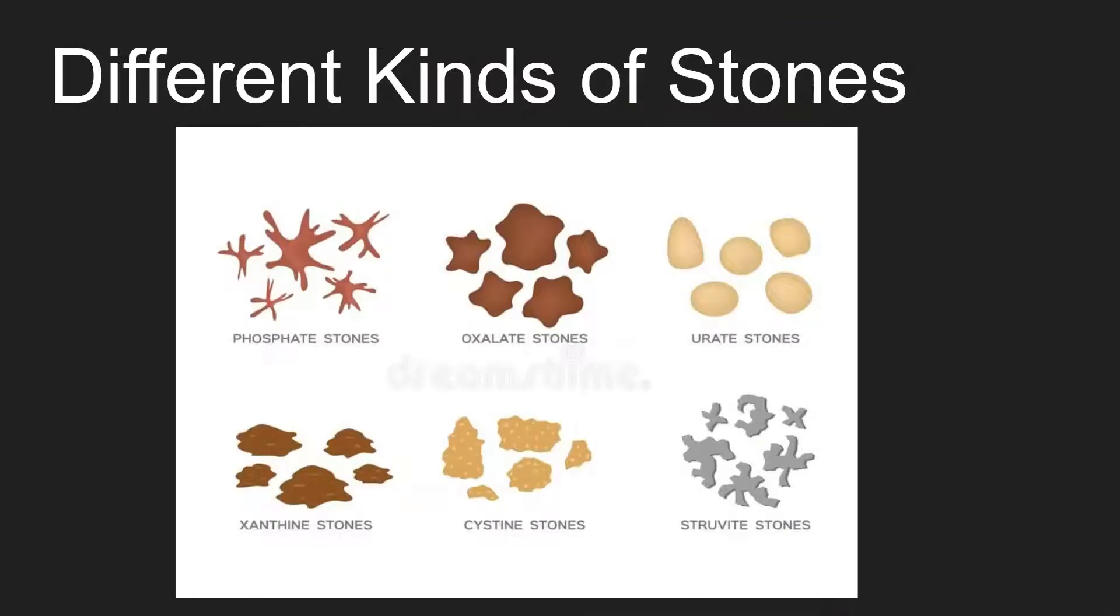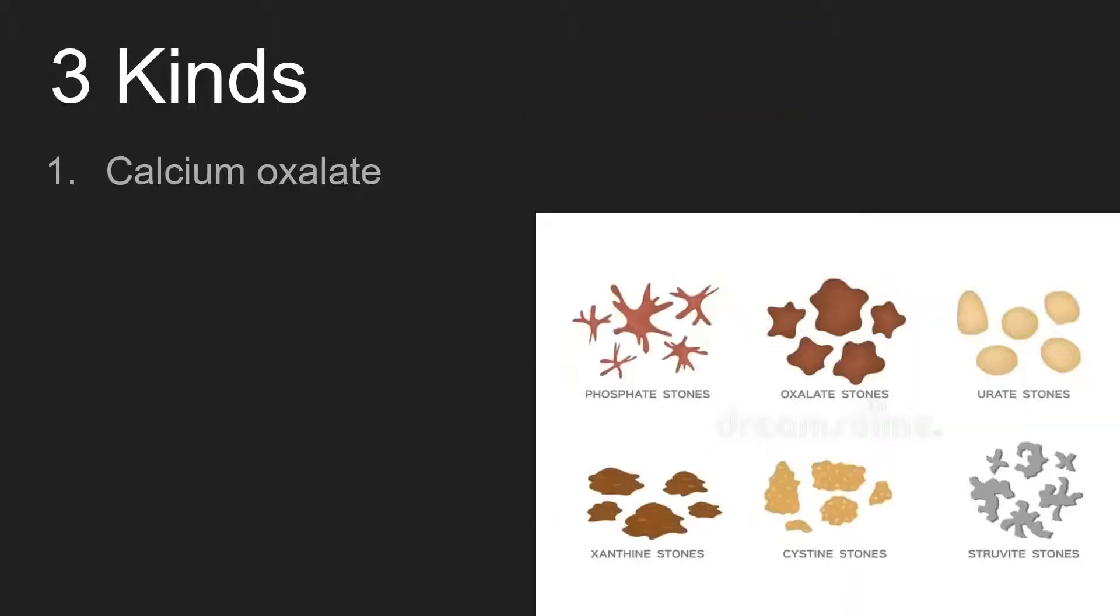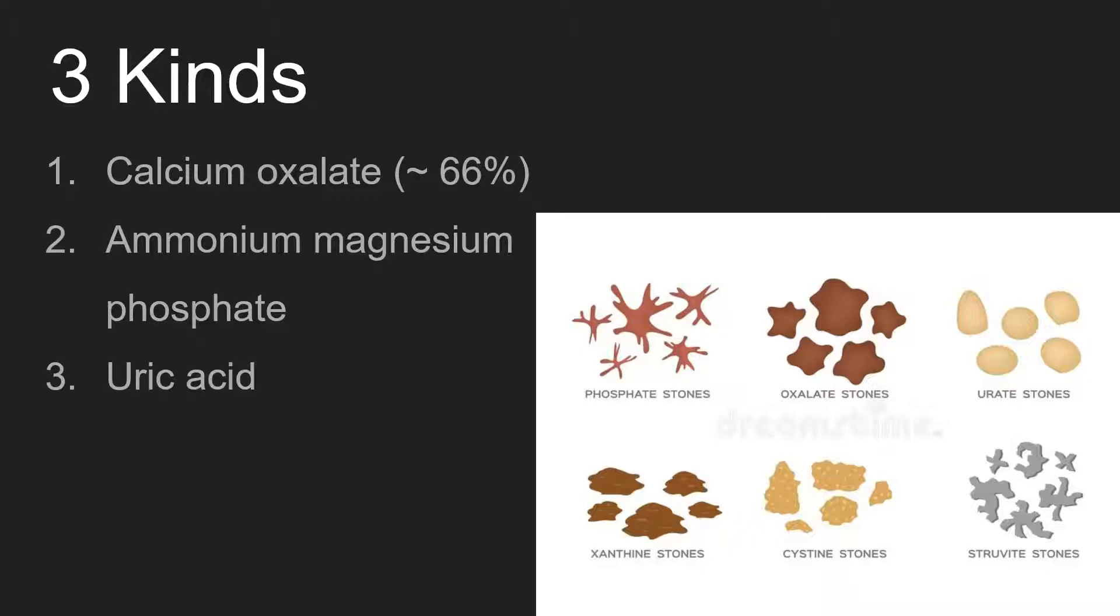There are different kinds of kidney stones. Here are the three most common: calcium oxalate, ammonium magnesium phosphate, and uric acid. Calcium oxalate is the culprit for about 66% of cases.